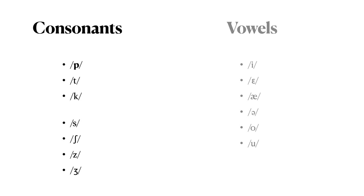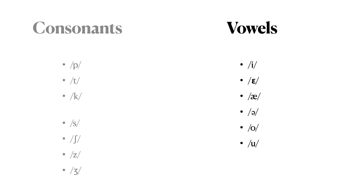Here are a few of the consonants and vowels in English. The vowels in English include sounds such as /ɛ/, /ɑ/, /ʌ/, /oʊ/, and /uː/.